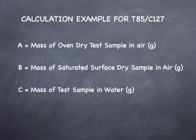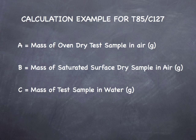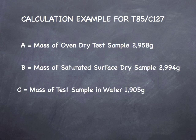Now that we have completed all the physical aspects of our test, we can go ahead and do our calculations for bulk specific gravity SSD as well as our calculations for absorption. To do this, we'll need three weights: the weight of the oven dry specimen (A), the weight of the saturated surface dry specimen (B), and the weight of the specimen submerged in water (C). All weights should be recorded in grams.